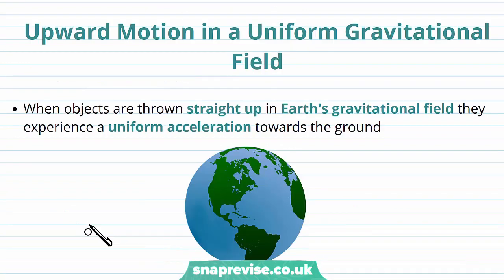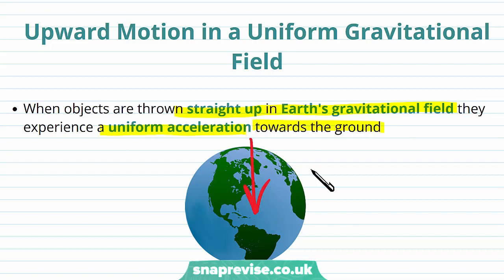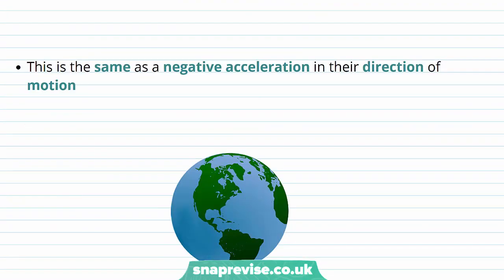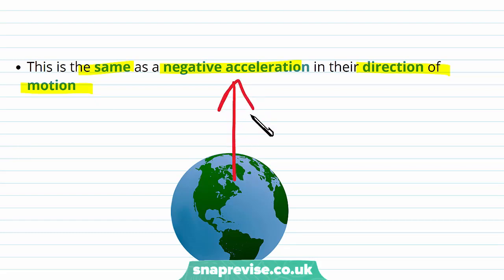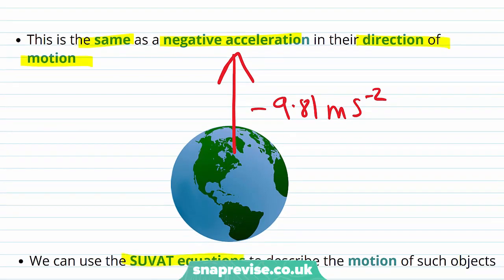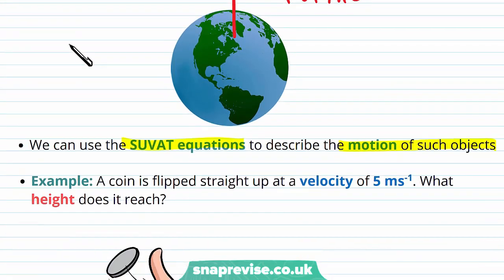Now we've looked at freefall, we're going to think about upward motion in a uniform gravitational field. When objects are thrown straight up in the Earth's gravitational field, they experience a uniform acceleration towards the ground of 9.81 m/s². This is the same as a negative acceleration in the direction of motion — because the object is moving upwards but the acceleration acts in the opposite direction, this is a deceleration. We can use the SUVAT equations to describe the motion of such objects.